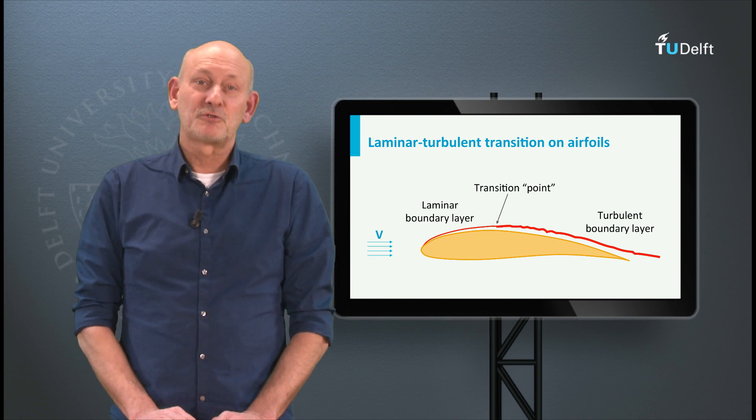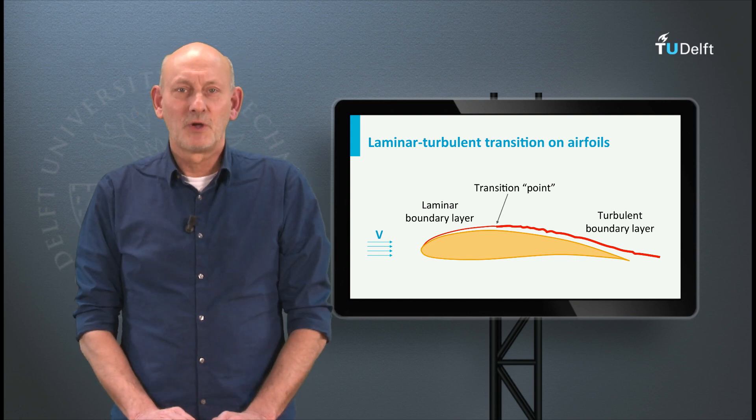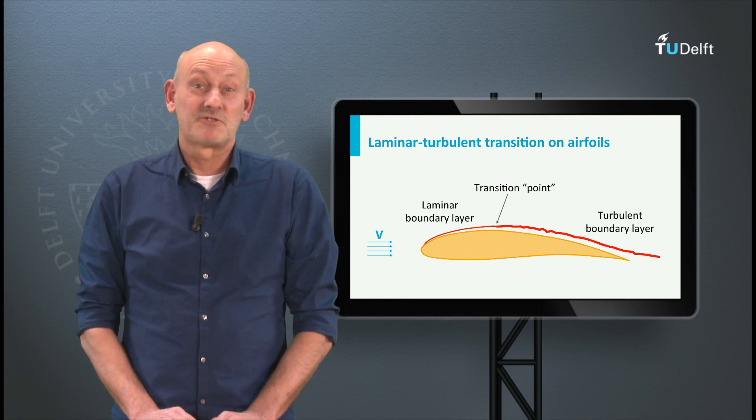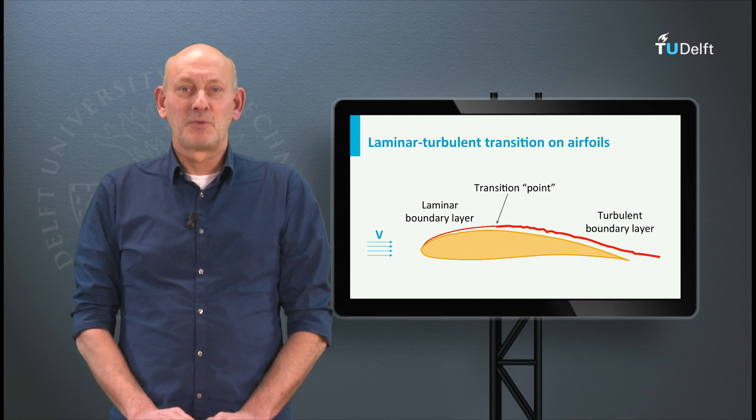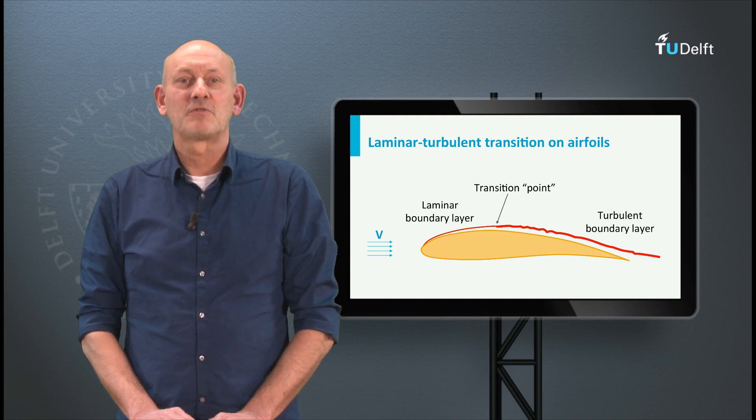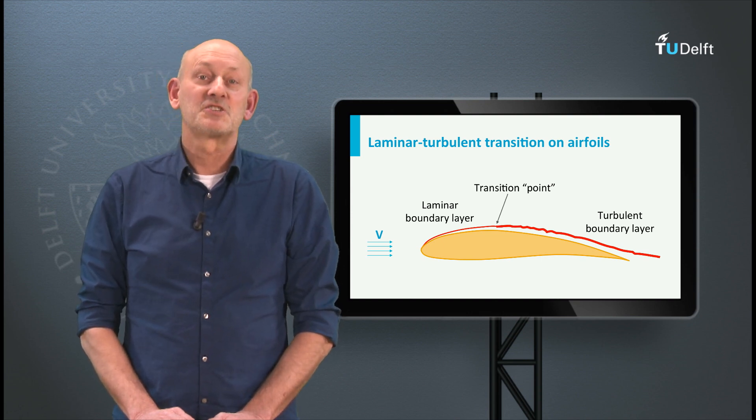Now this is just how the outer flow behaves. Of course, like we have seen in the previous lectures, we also have the boundary layer, as here is drawn somewhat exaggerated, with a laminar and a turbulent part, separated by a transition region, or as here is written, a transition point. Since, compared to a flat plate, the region in which transition takes place on an airfoil is much shorter.